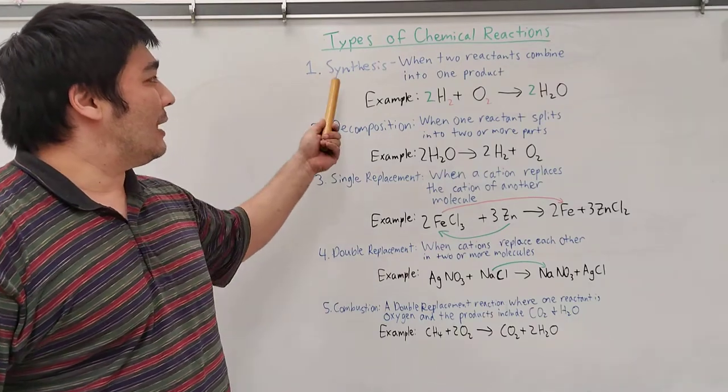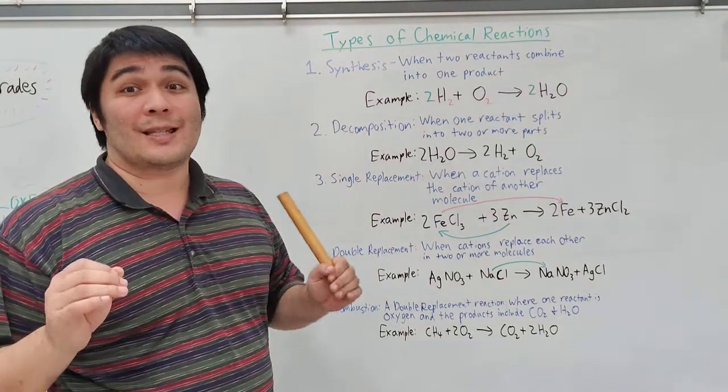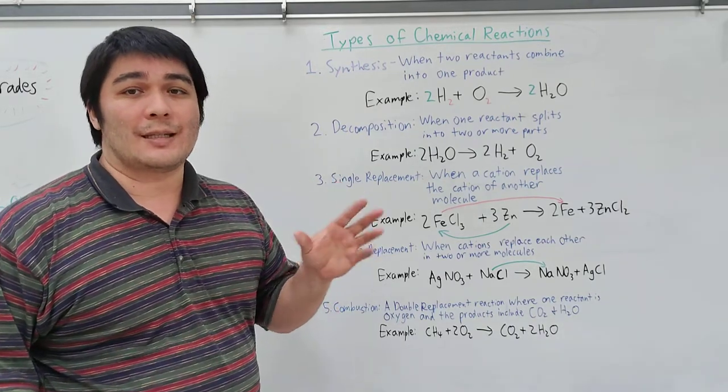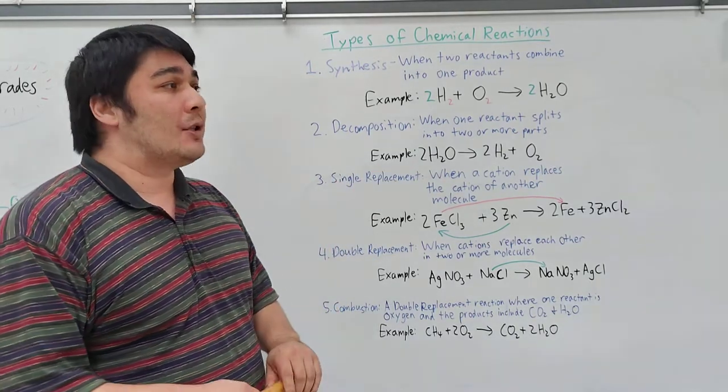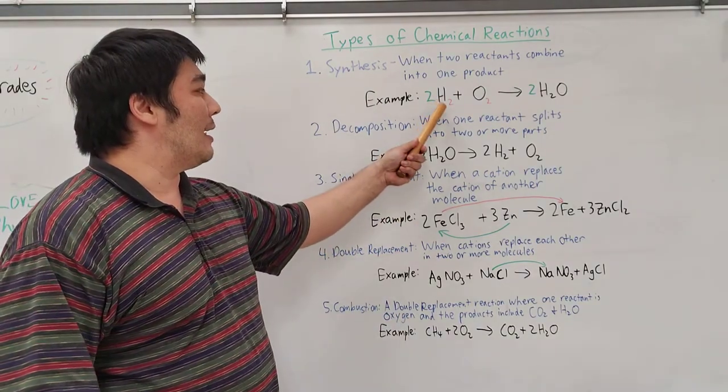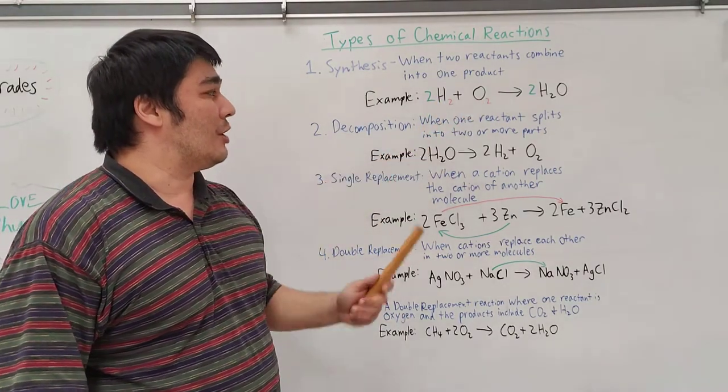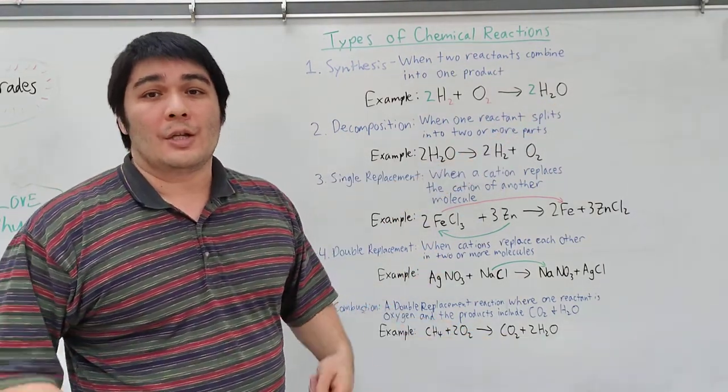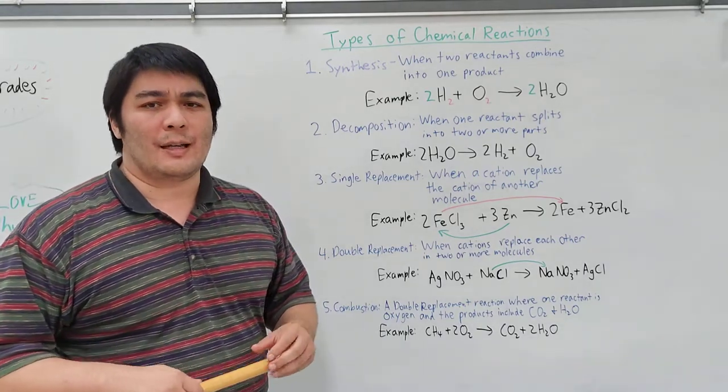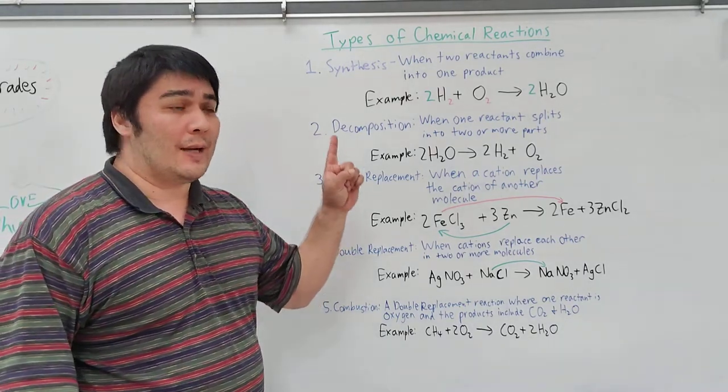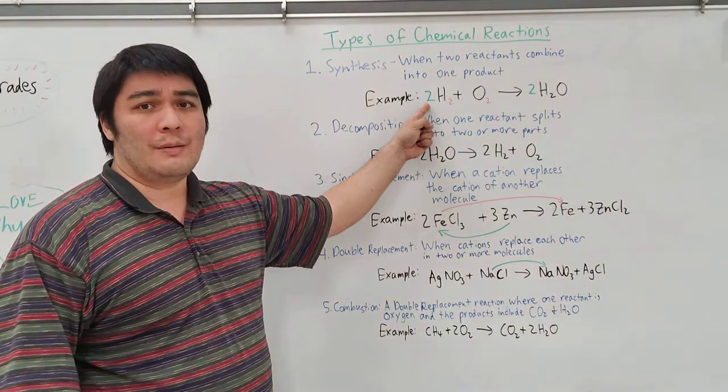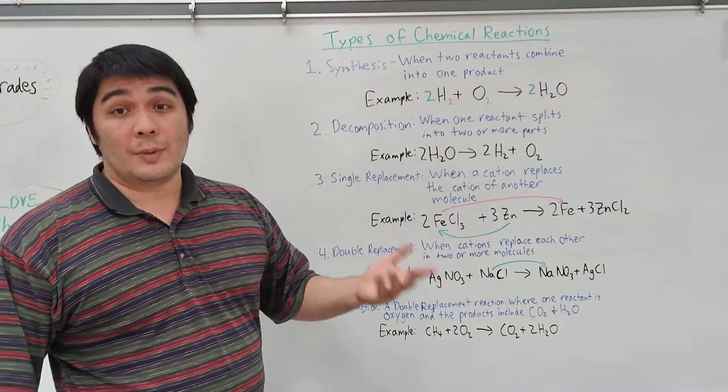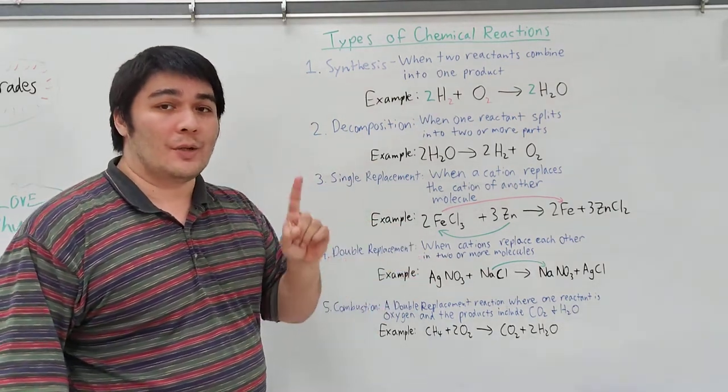We're going to start with synthesis. So when we talk about synthesis, synthesis is basically you have two different reactants coming together. And so what that looks like is you've got, like my example, hydrogen gas plus oxygen gas combines into H2O or water. So what does that, and how do you even think about that? In fact, the question you might even ask is, why do I have this green mark over here and this red mark over here? Why is this two red and green? The reason why is because in this chemical reaction,